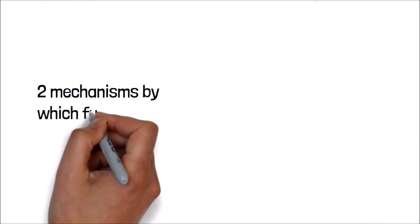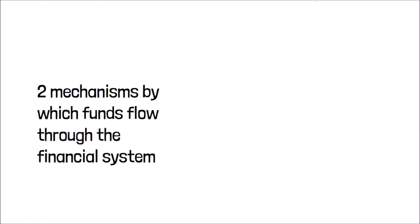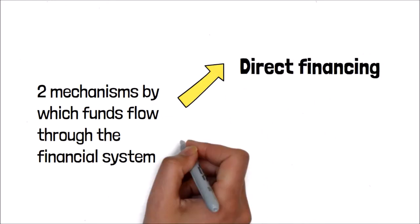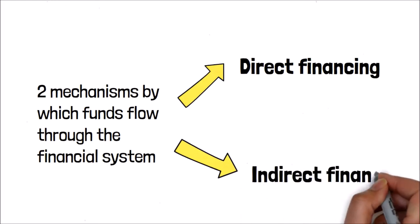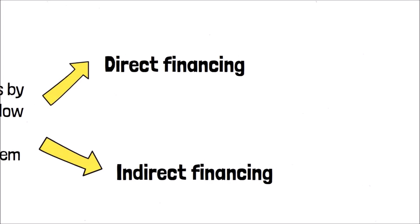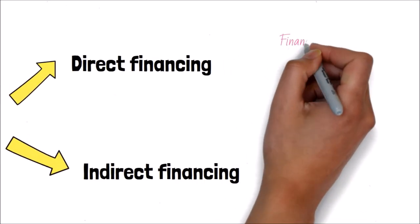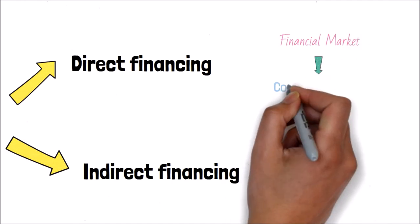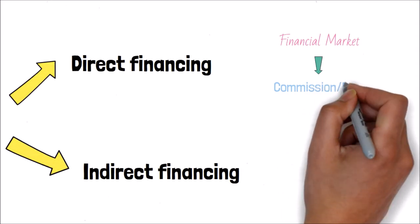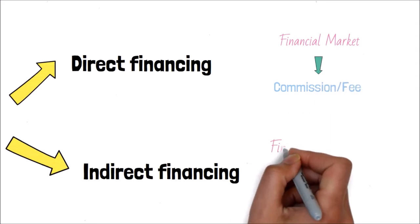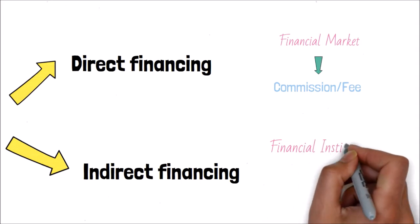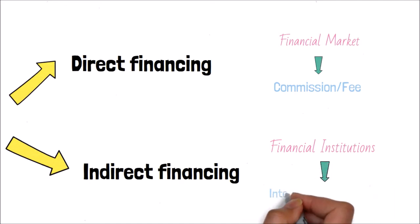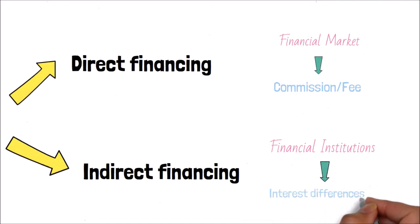There are 2 mechanisms by which funds flow through the financial system. First, direct financing, which is applied only for large corporations with high reputation. Second, indirect financing, applied for all demands of funds. In direct financing, funds transfer from SSU to DSU through the financial market, and the financial market will receive a commission or fee. In indirect financing, funds transfer from SSU to DSU through a financial institution, which receives interest differences or a gap.